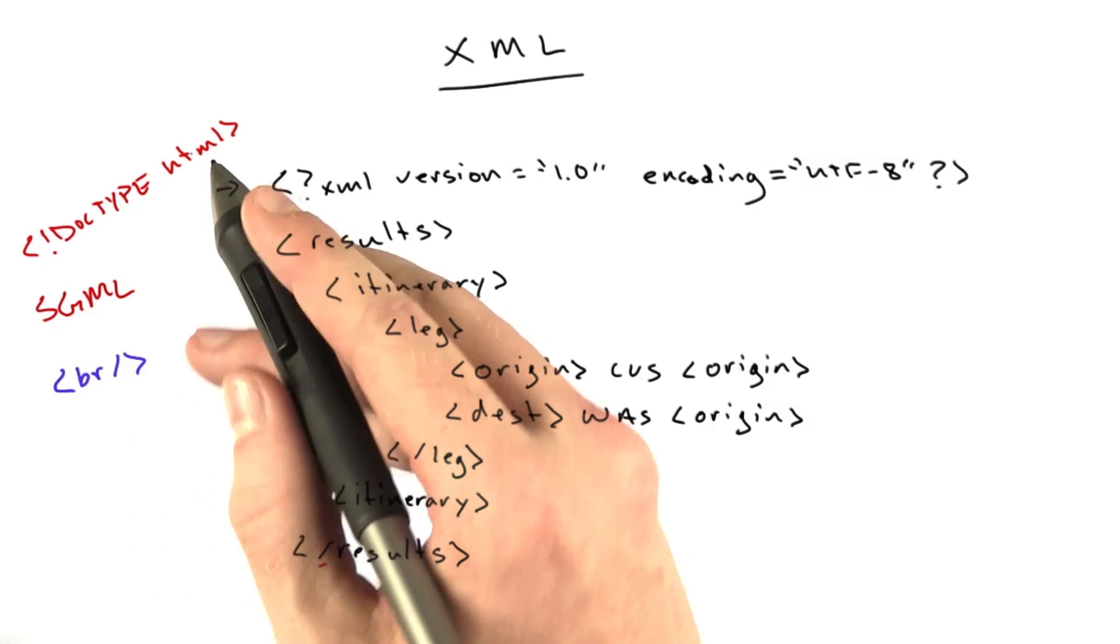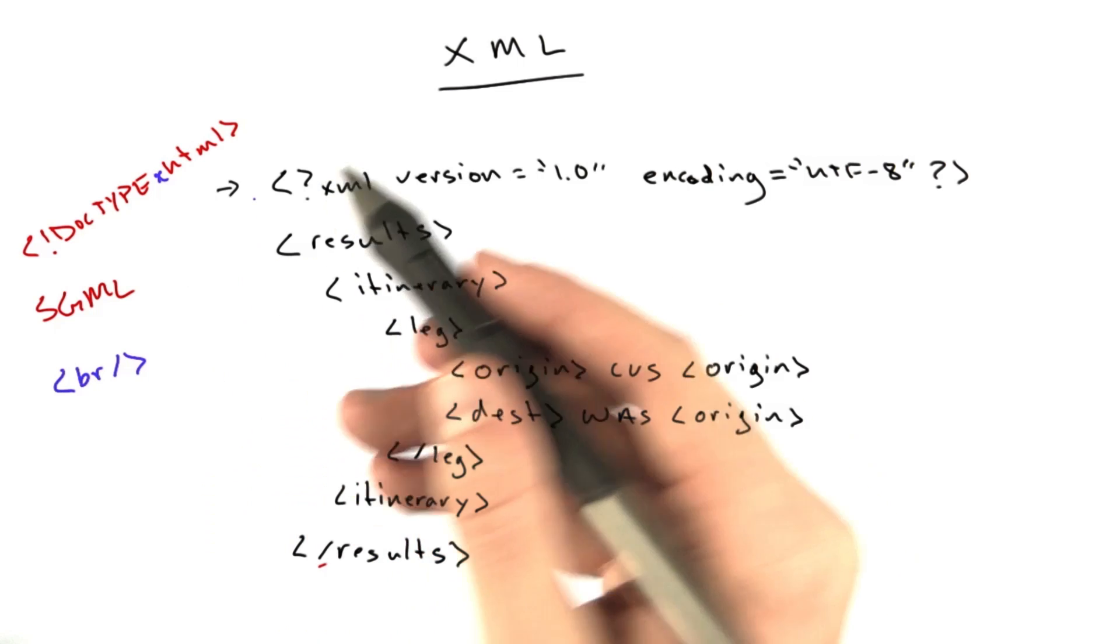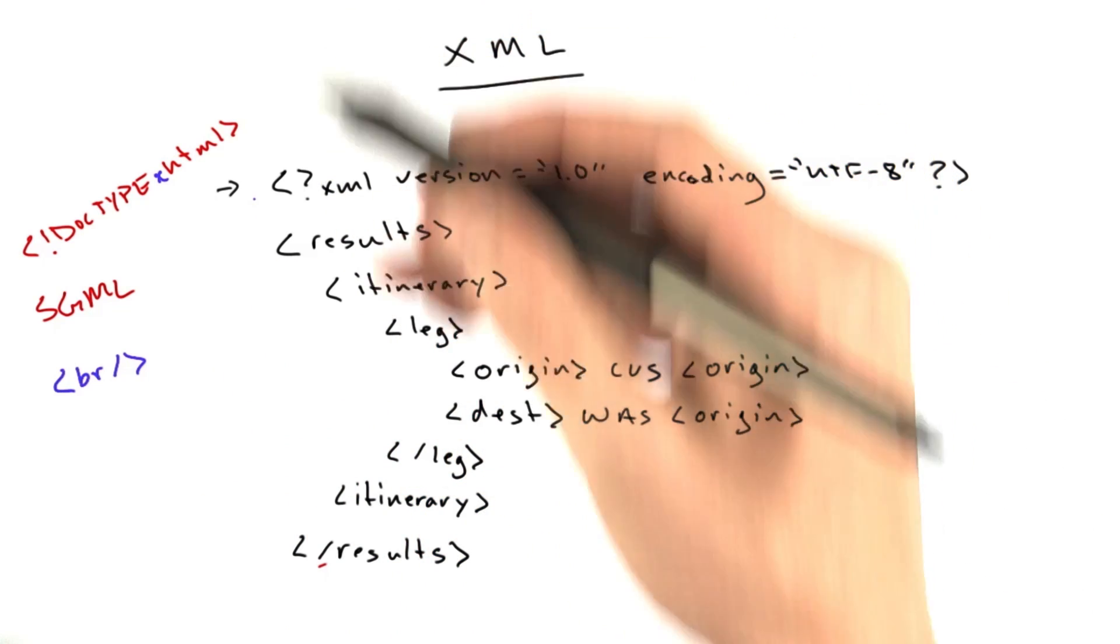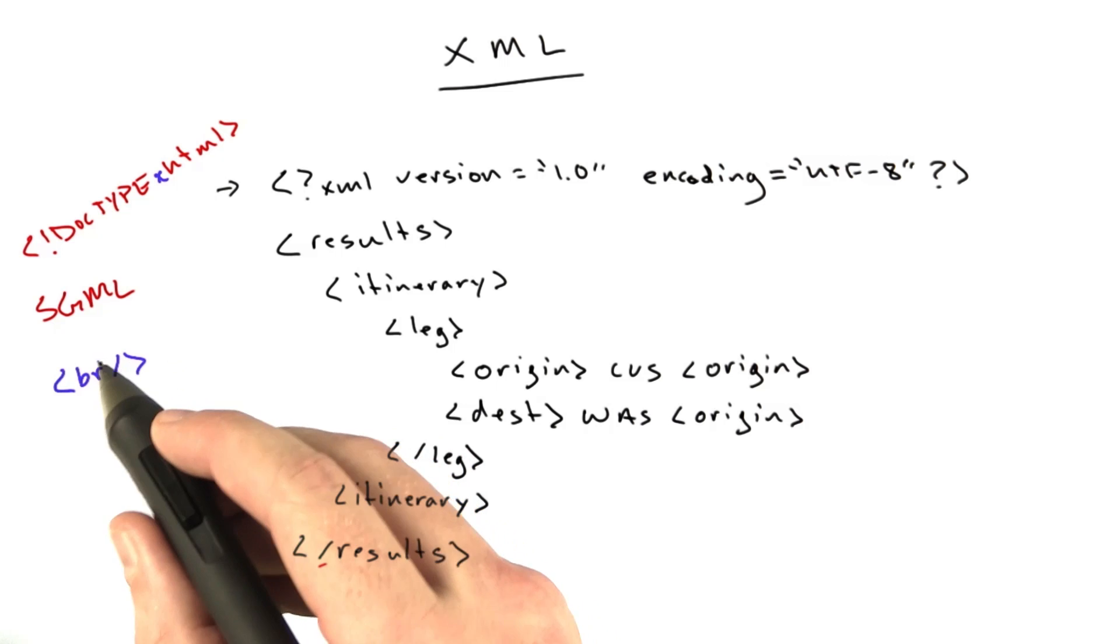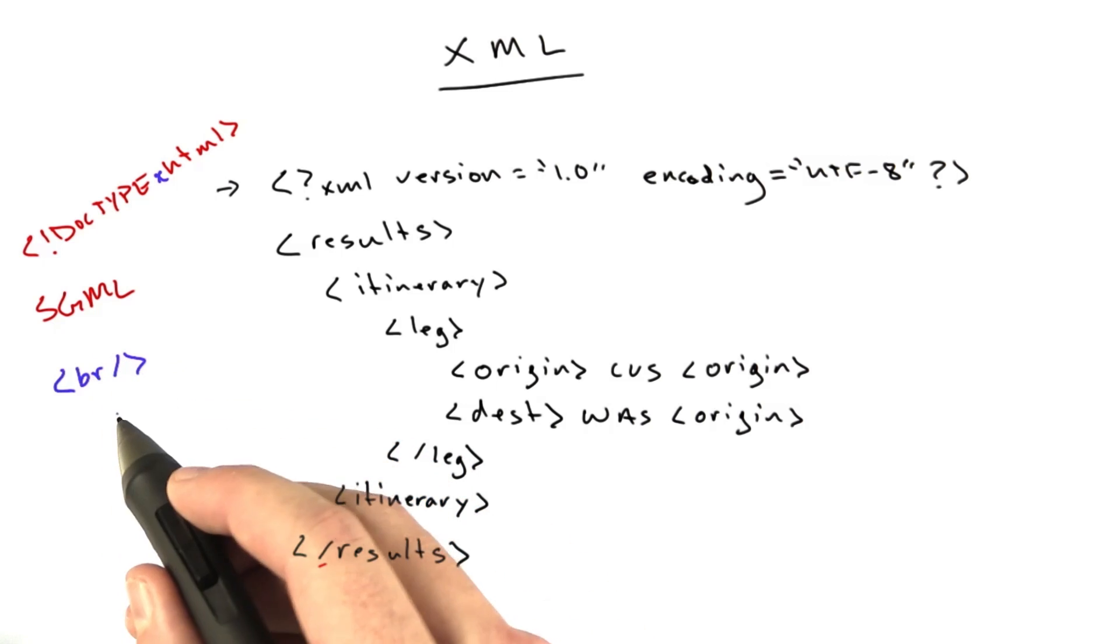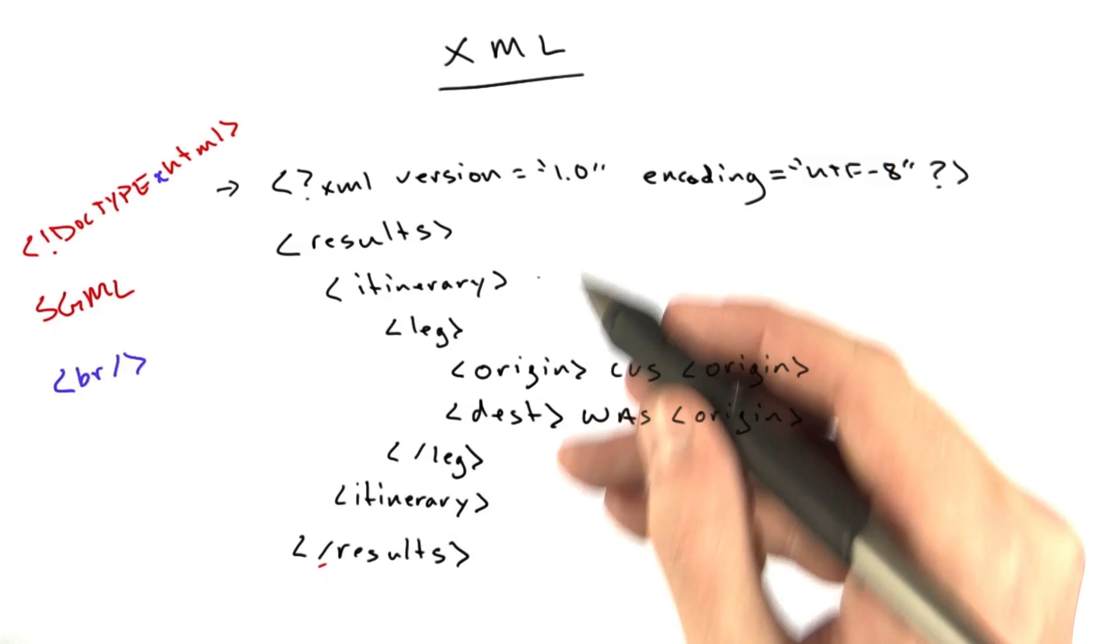And in fact, there's actually a doc type for HTML called XHTML, which basically says, my HTML document is actually going to be valid XML. And instead of doing void tags with no closing slash, you include the closing slash before the greater than. And you'll see that a lot in XML.